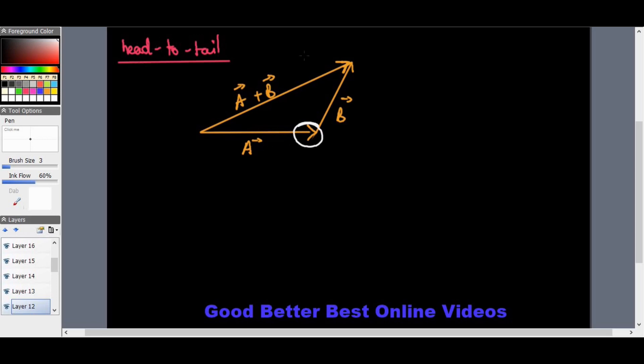Because the head of A is touching the tail of B, it's called the head-to-tail method. Then we also have the tail-to-tail method. In some papers they ask you to use a specific method. I always preferred head-to-tail.